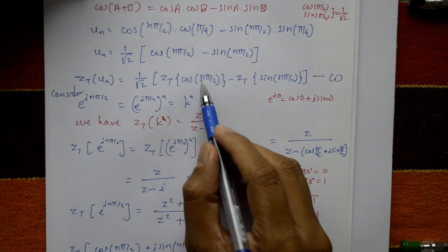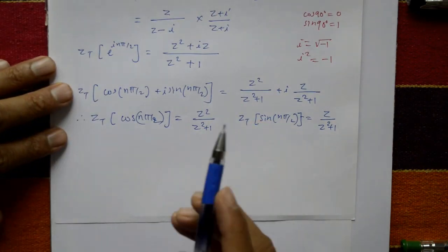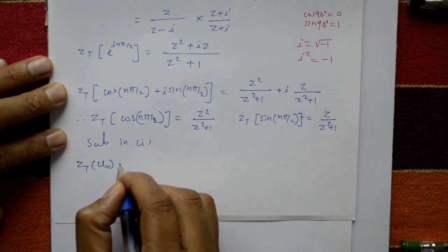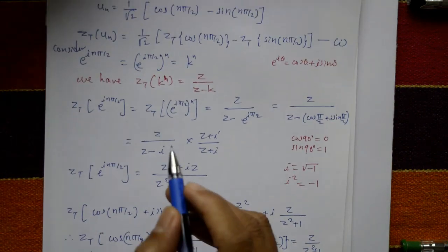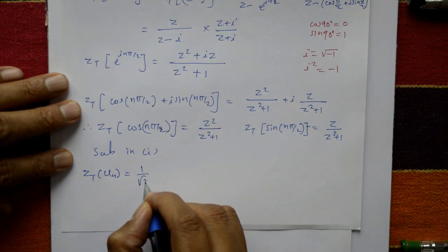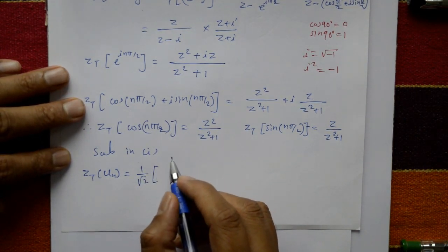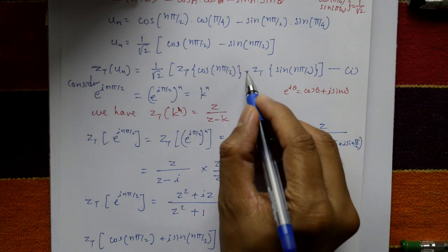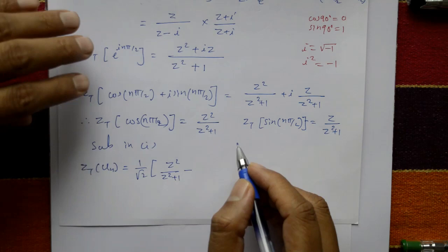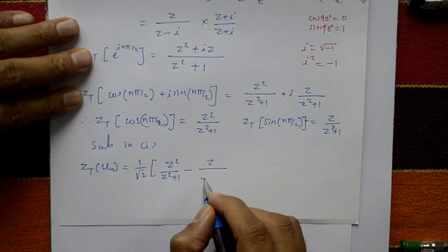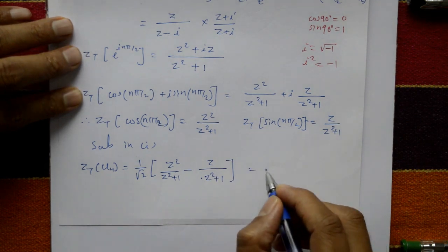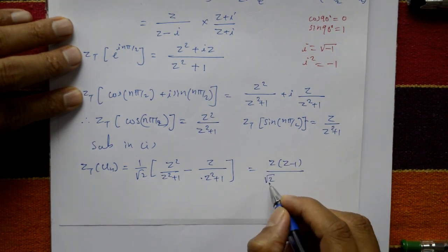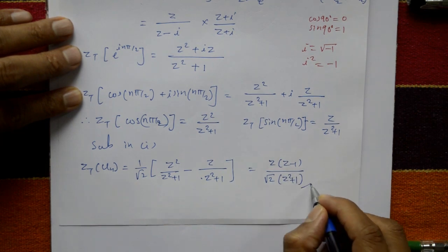Substituting back into equation number 1: Z{u(n)} = (1/√2) · [Z²/(Z² + 1) − Z/(Z² + 1)]. The final answer is Z(Z − 1) / [√2 · (Z² + 1)], which is the required solution.